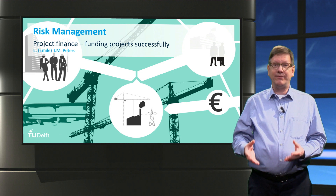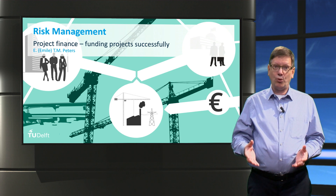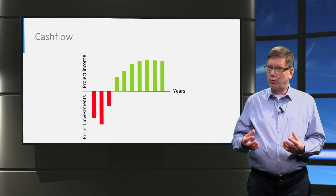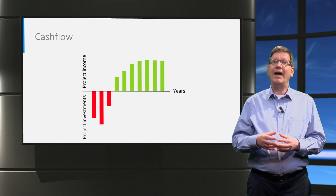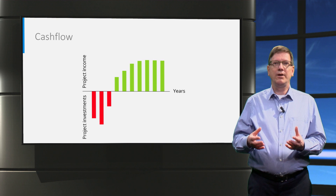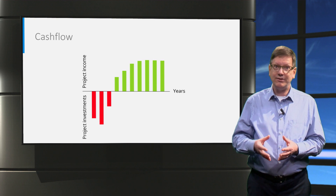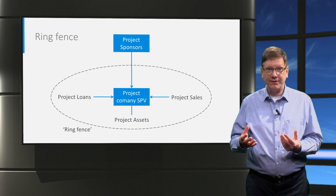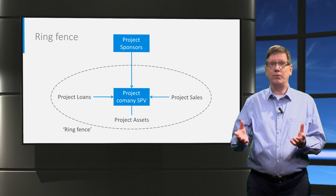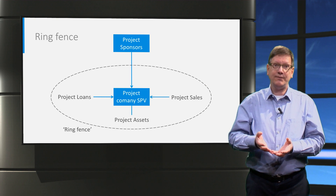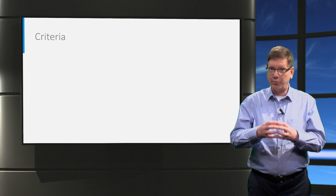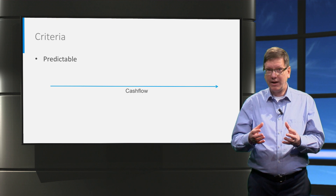Previously, we looked at how investors and lenders assess an investment. We saw that they apply financial analysis to decide whether to invest, focusing on the cash flows generated and the returns they can expect. Then we applied that to the funding of projects, where a specialty area called project finance has developed. In project finance, we contain the financing purely to the project by means of a special purpose vehicle or SPV, which legally ring-fences the cash flows of the project. The consequence is that we look purely at those cash flows — they need to be predictable and transparent.